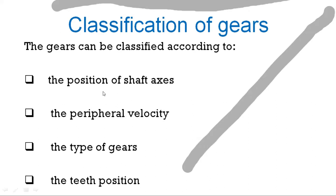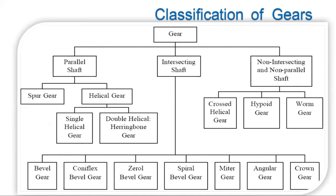First, we will see the classification of gears based on the position of the shaft axis. Gears are classified based on the shaft orientation: power transmission between parallel shafts, between intersecting shafts, or between non-intersecting non-parallel shafts. When the two shafts are intersecting, both shafts lie on the same plane but are intersecting. If both shafts are lying on different planes, you get non-parallel non-intersecting shafts.